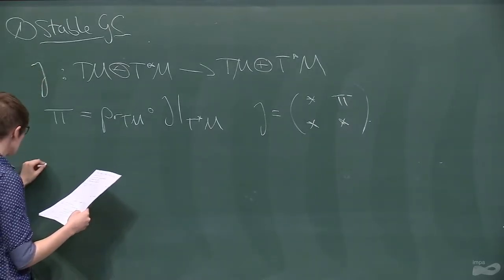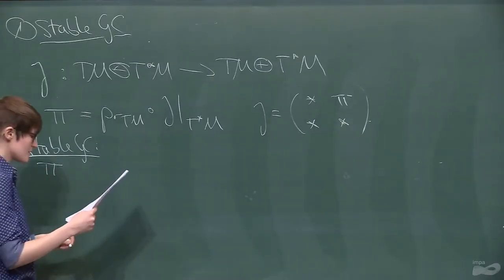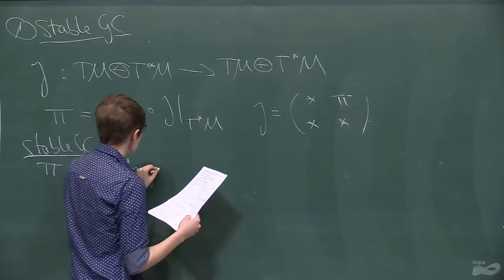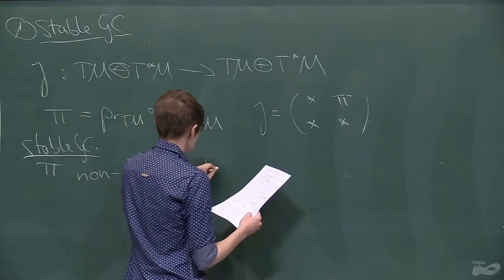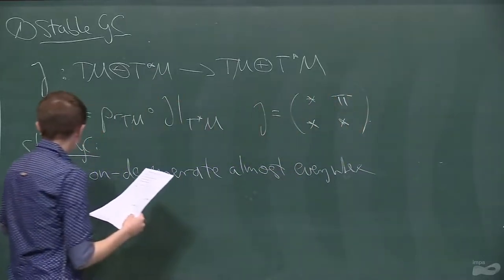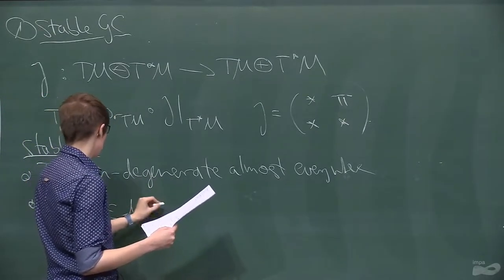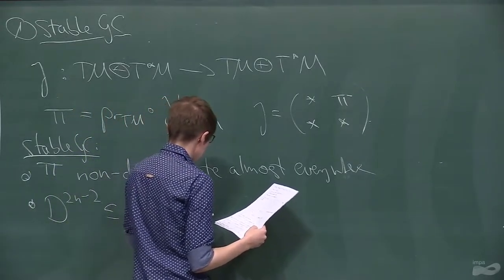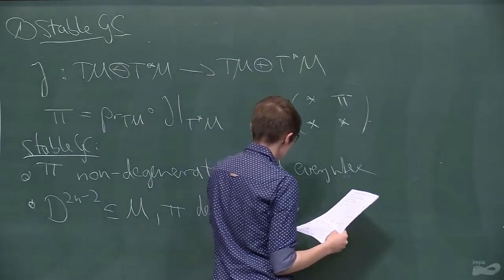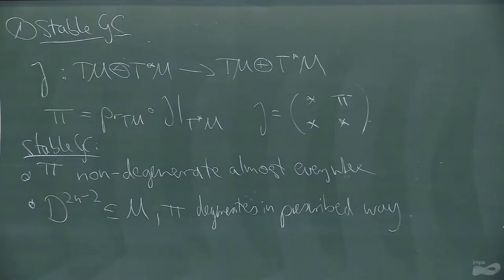For a stable generalized complex structure, the induced Poisson structure will, like for symplectic, be non-degenerate but now not everywhere - just almost everywhere. There is then a distinguished codimension-two submanifold where the Poisson structure degenerates in a particular way.